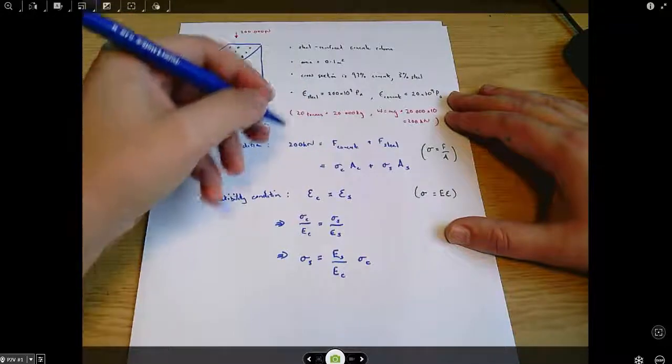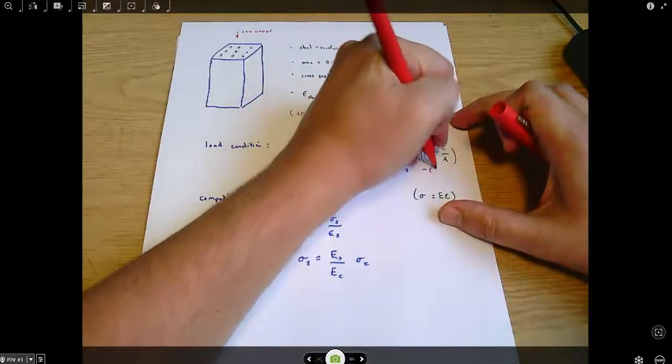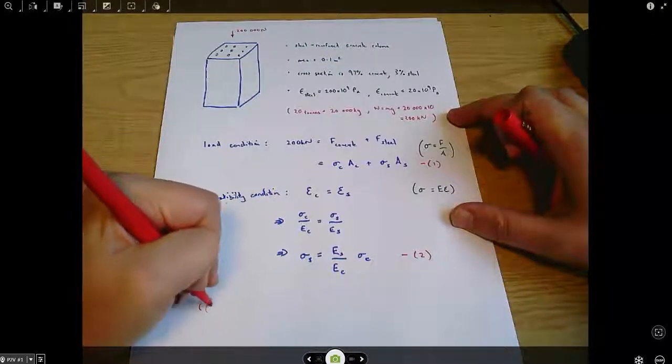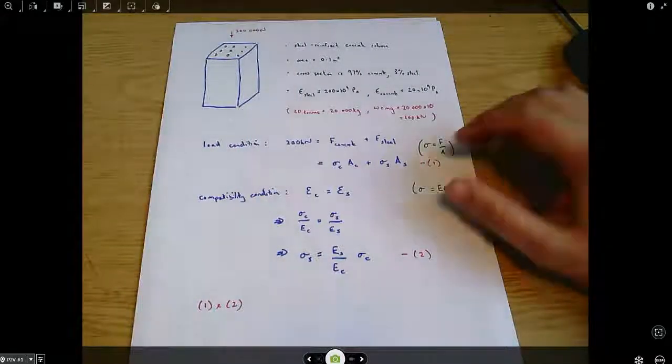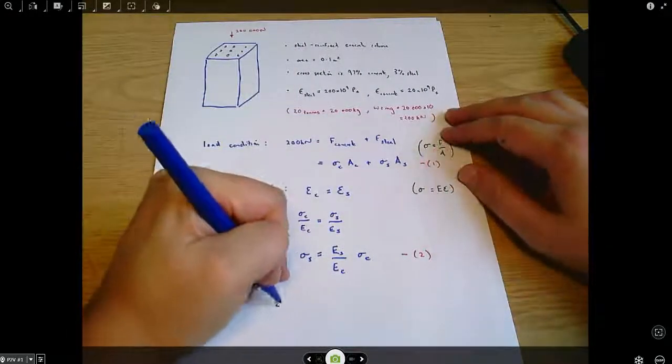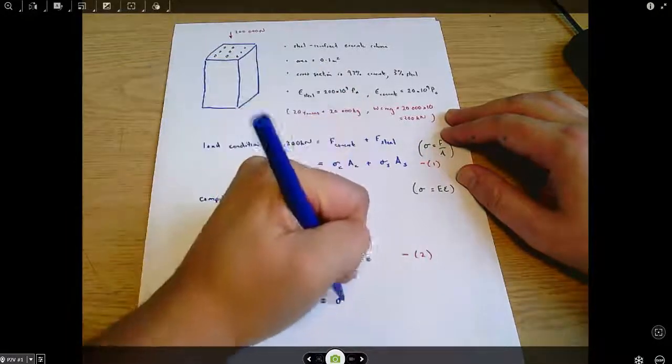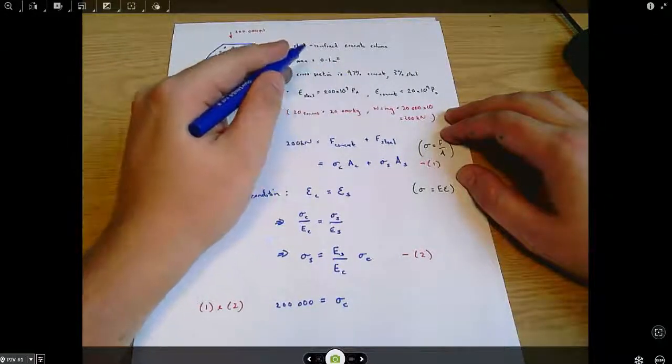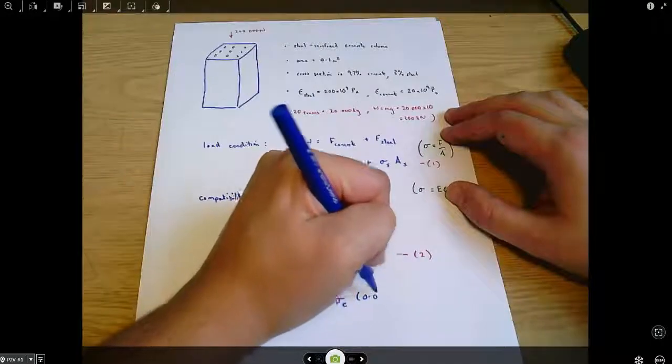And now I'm going to combine, if I call this equation 1 and this equation 2, and I combine them, I can say 200,000 equals stress in the concrete multiplied by the area of the concrete. That's 97% of 0.1, which is 0.097.